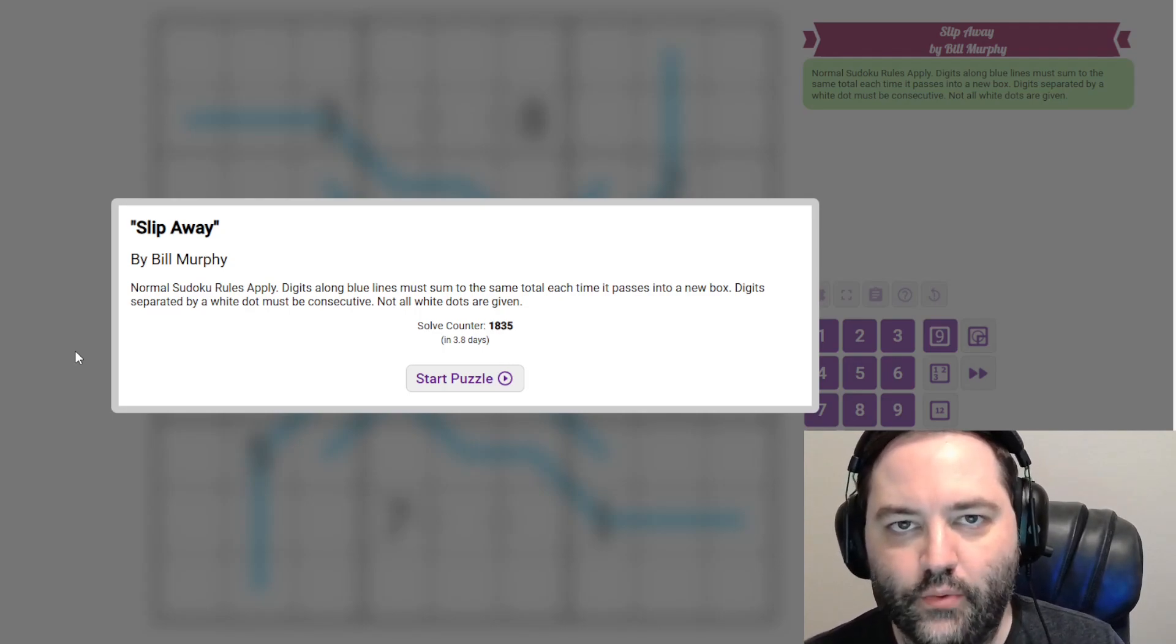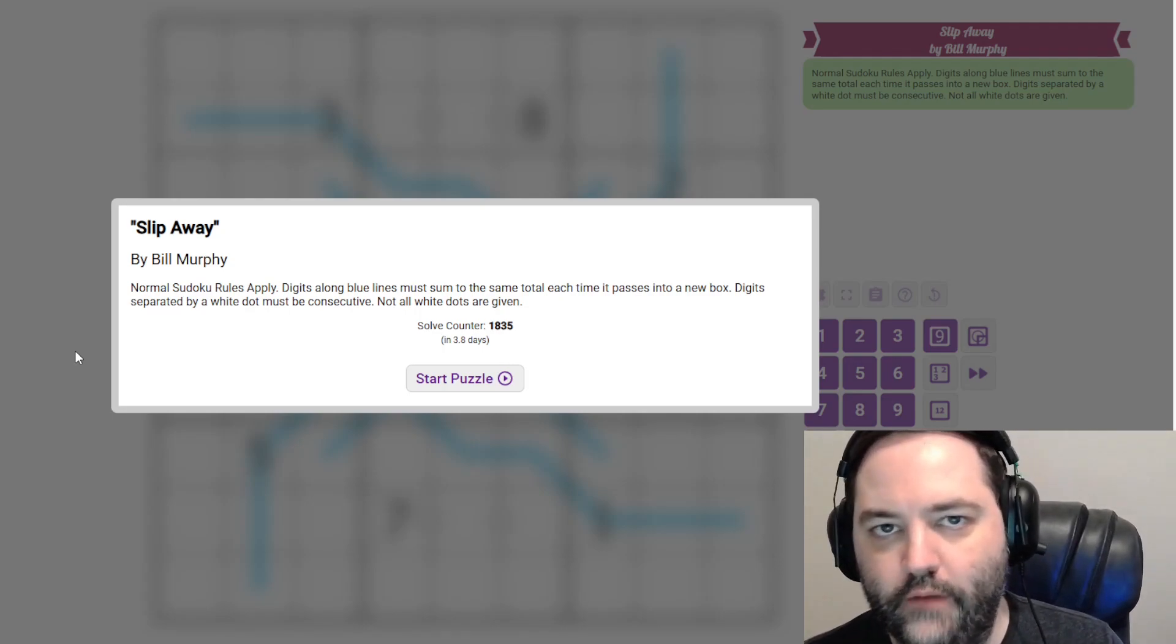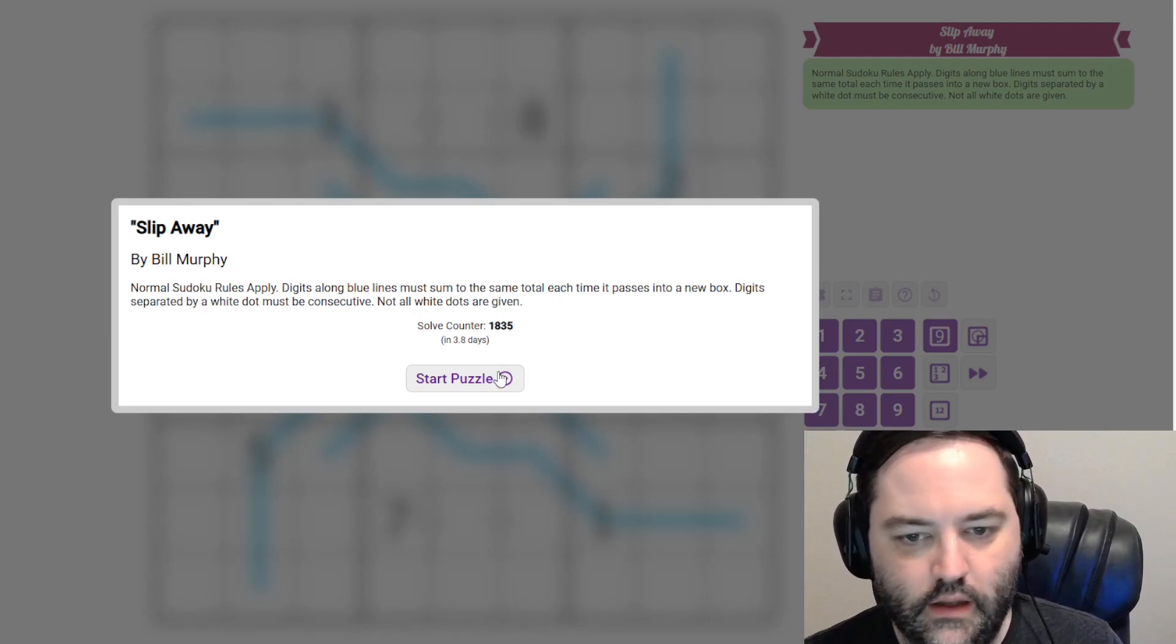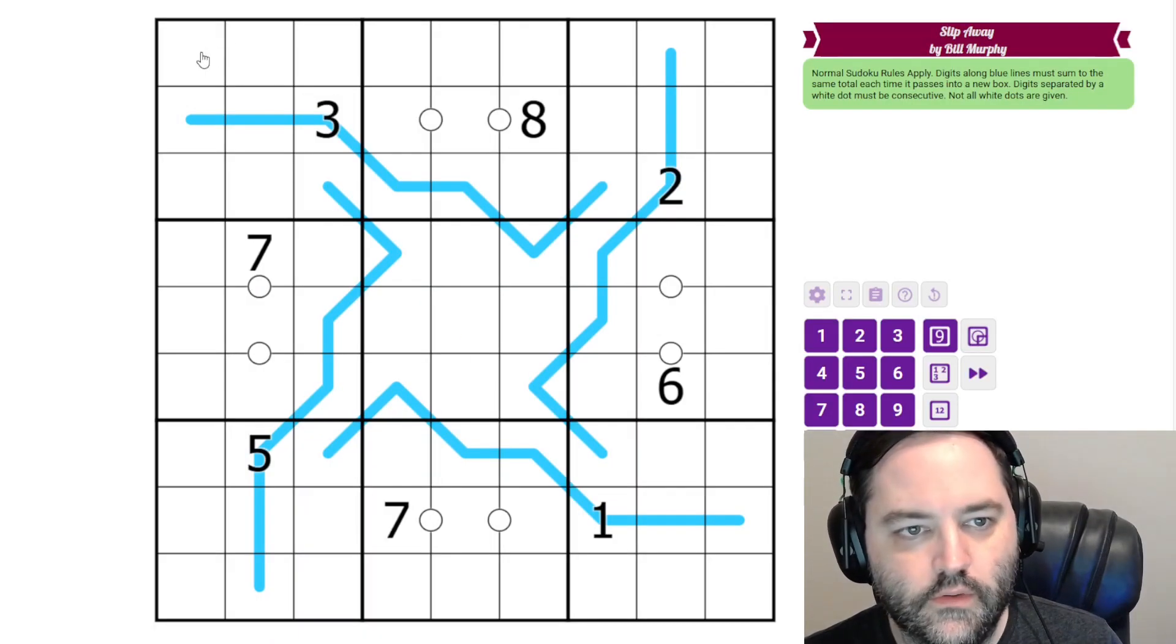Hi everyone, this is the Gas Walkthrough for July 1st. I'm Philip Newman. Today I'm solving Slip Away by Bill Murphy. This is a region, some lines, and consecutive pairs Sudoku.